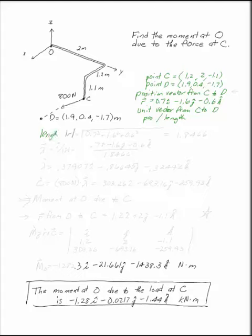Here we've got a length of position vector of 0.7 squared plus 1.6 squared plus 0.6 squared. All of that under the square root gives you 1.8466.